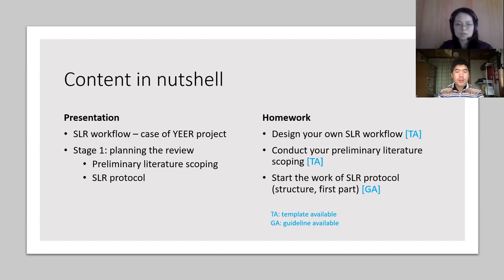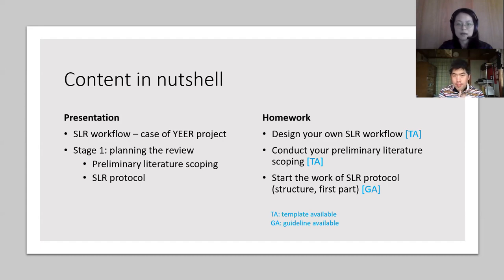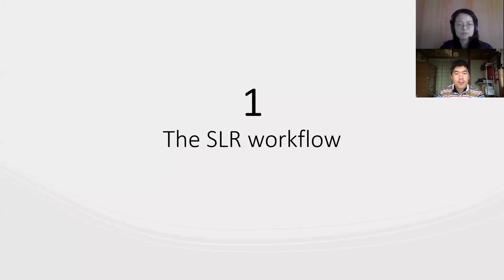Responding to these three parts, your homework will be: first, start designing your own research review workflow; second, conduct some preliminary literature review based on your topic; and third, start working on producing your own review protocol based on the guidelines provided. The blue characters TA means template available and GA means guideline available — I'll show those in detail later.